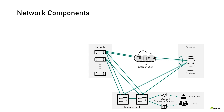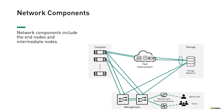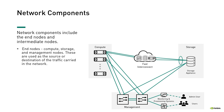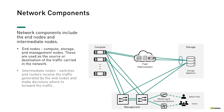How do we create a network? Network components include the end nodes and intermediate nodes. The end nodes include compute, storage, and management nodes. These are the source or destination of the traffic carried in the network. The intermediate nodes, such as switches and routers, receive the traffic generated by the end nodes and make decisions as to where the traffic should be forwarded.